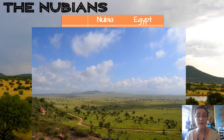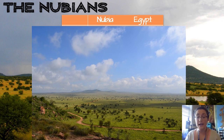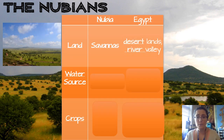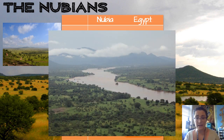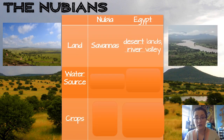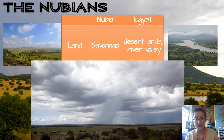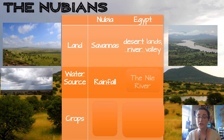For example, for the lands in Nubia we have savannas — these large grasslands — with lots of wild animals and more rainfall. But in Egypt we had the desert lands and the river valleys, more of just right along the river and then desert on either side. In Nubia, the main water source is rainfall, like those big rain clouds that'll just come and dump a whole lot of rain at once. But in Egypt, the Nile River was the main source of water. It doesn't rain much in Egypt; most of the water is from the Nile.